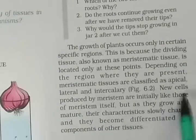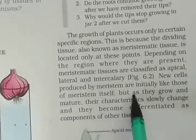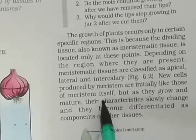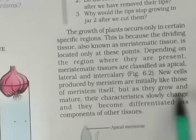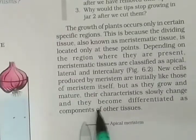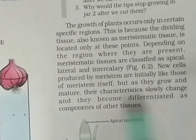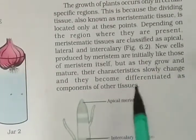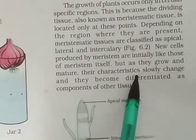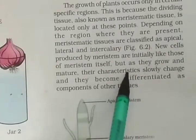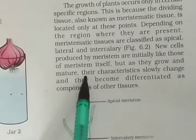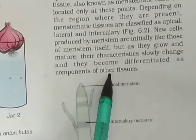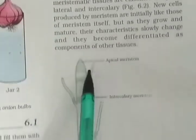New cells produced by meristem are initially like those of the meristem itself, but as they grow and mature, their characteristics slowly change and they become differentiated as components of other tissues.